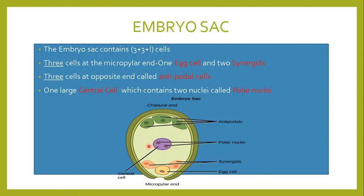So that is the structure of the embryo sac. It contains in total seven cells: three at the micropylar end — the egg cell and the two synergids; three at the other side known as the antipodal cells; and at the center a central cell made up of two polar nuclei.